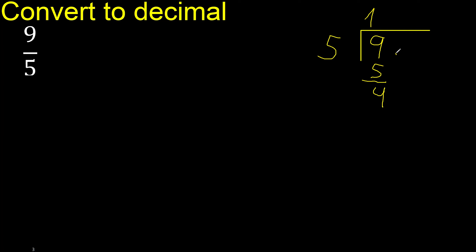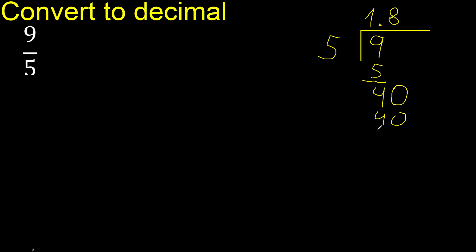There is no number that goes down, therefore complete — always complete with 0 and a point. Point only once. We now have 40. 5 multiplied by 8 is 40.